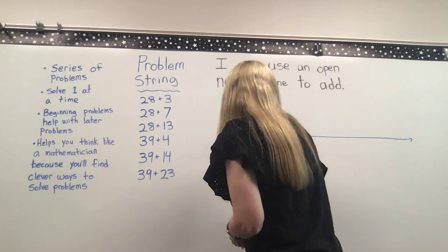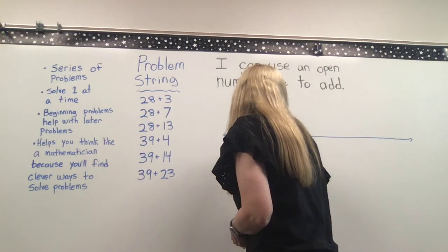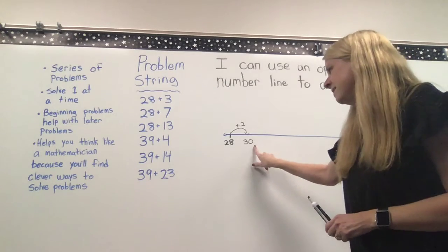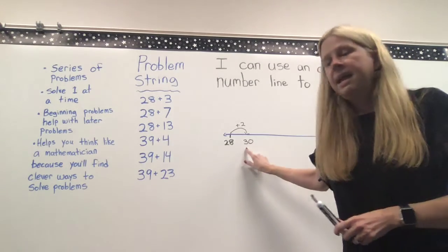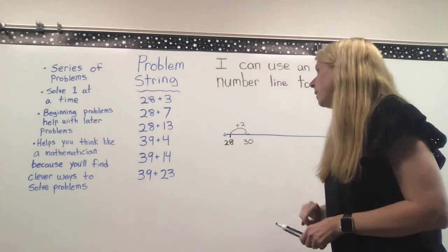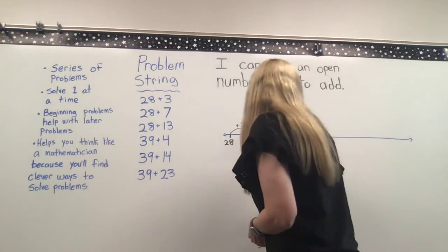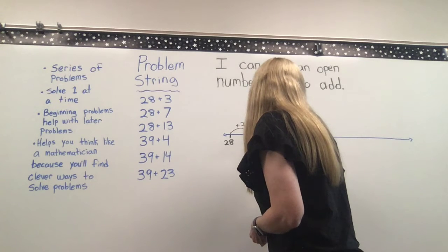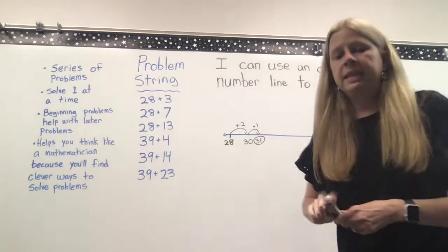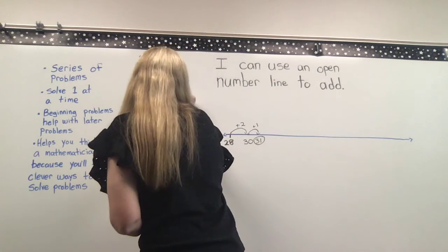So I know that it takes me two jumps to get to 30. So 30 is our friendly number because it ends in a zero, it's easy to add numbers to it, and it's a nice neat friendly number. So we needed to add 3 and we've added only 2. So we need to add one more. So 1 more jump takes us to 31. So 28 plus 3 equals 31.